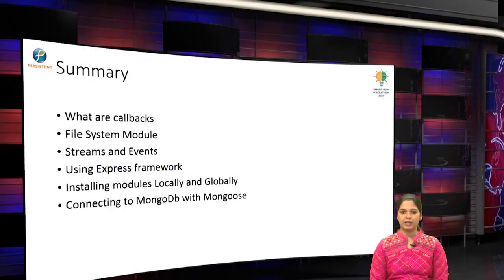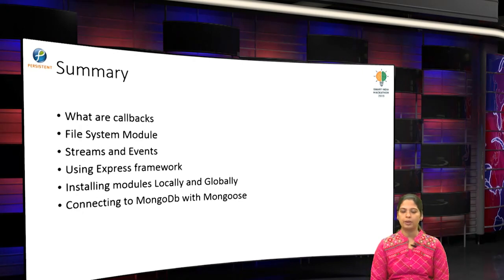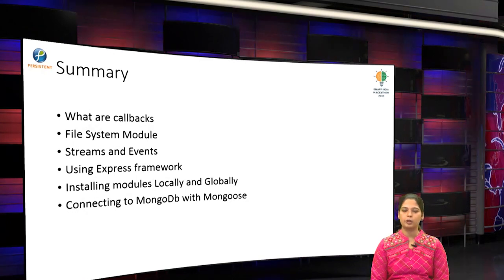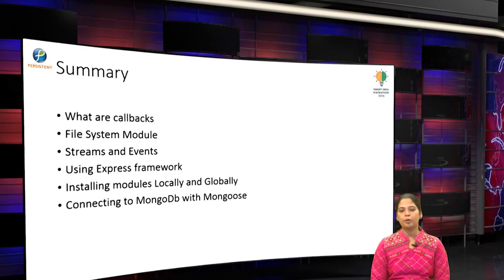We have come to the end of this session. To summarize: we looked at error-first callbacks and how to work with them in Node. We looked at the file API and two different ways — asynchronous versus synchronous execution. We looked at an important concept called streams in Node.js and how to work with them using events. We looked at how to build a web server using the Express framework. And lastly, we looked at how to connect to the database — namely MongoDB — from Node.js. I hope you found this session interesting and useful. Thank you everyone.